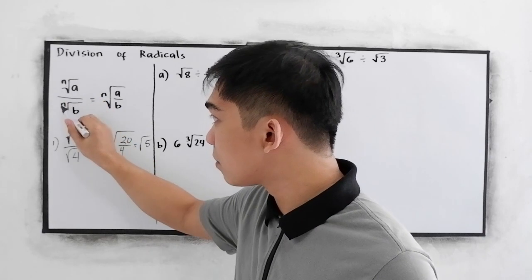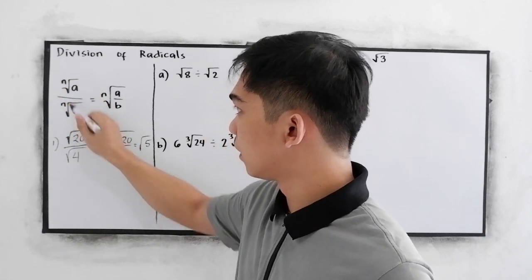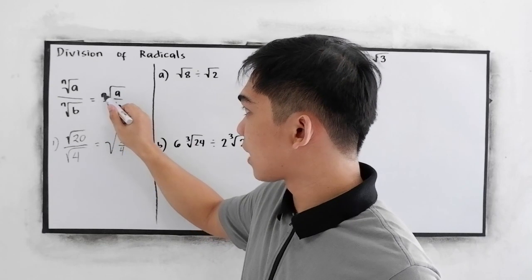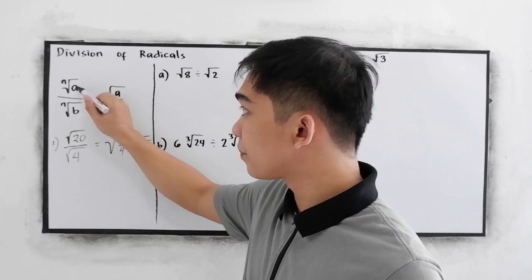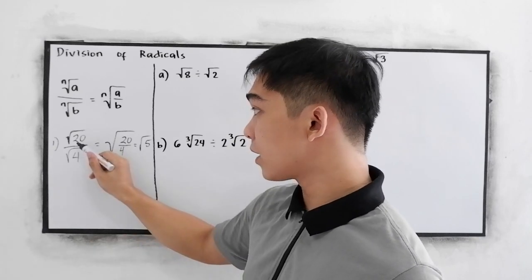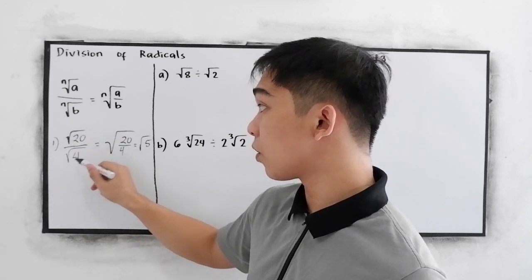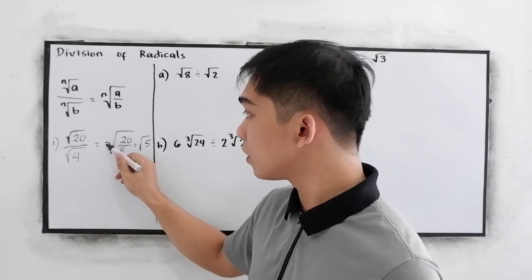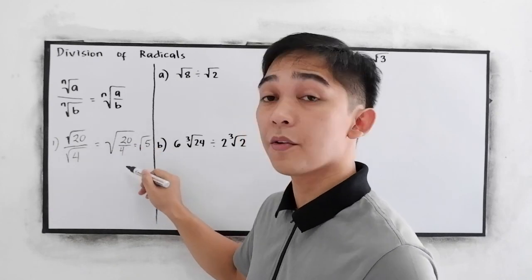Notice, if we have the same index, we can just copy n root of the numerator, which is a, over b. Likewise, square root of 20 over square root of 4 is equal to square root of 20 divided by 4, which is 5.